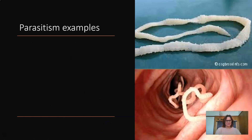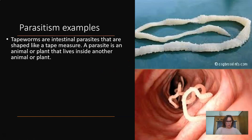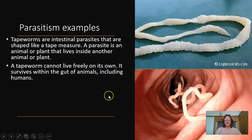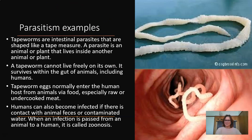Let's now take a look at parasitism examples. Tapeworms are intestinal parasites that are shaped like a tape measure. A parasite is an animal or plant that lives inside another animal or plant — and remember, parasitism is where one animal or plant is harmed. A tapeworm cannot live freely on its own; it survives within the gut of animals, including us humans. Tapeworm eggs normally enter the human host from animals via food, especially raw or undercooked meat — so make sure that meat is cooked on the braai! Humans can also become infected through contact with animal feces or contaminated water. When an infection is passed from an animal to a human, it is called zoonosis.